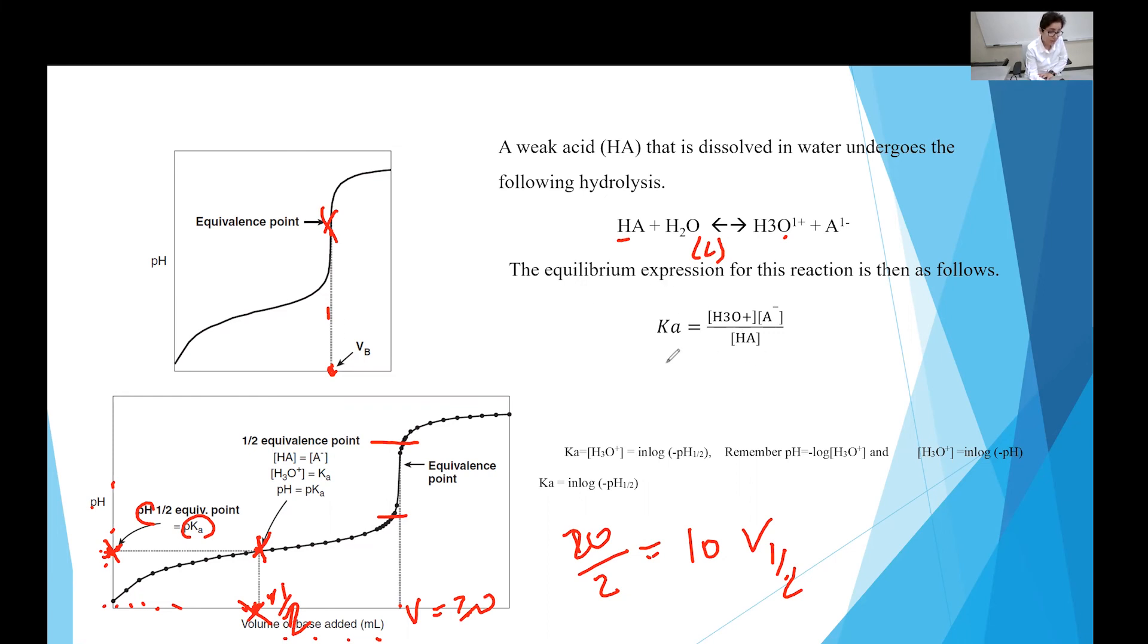At the half point, concentration of the conjugate base equals the concentration of the acid. So Ka equals concentration of H3O+. So Ka equals concentration of H+. And pKa equals pH. How do you go from Ka to pKa? From Ka to pKa, you take negative log. But if you have pKa and you want to go to Ka, you take the inverse log of the negative pH.